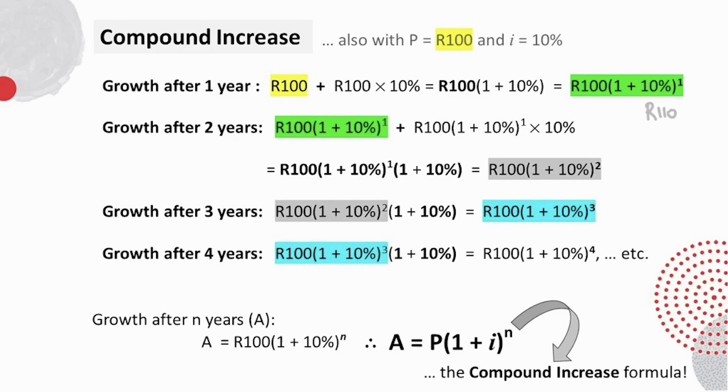After the second year, however, the interest would be calculated on the accumulated amount of 110 rand. In other words, A after two years would be 110 rand plus 10% of 110 rand, which is 110 rand plus 11 rand, which is 121 rand.